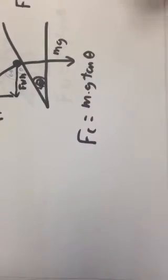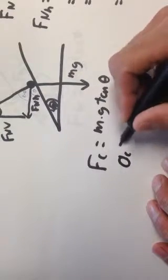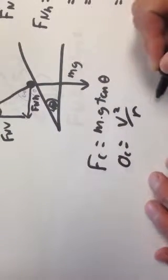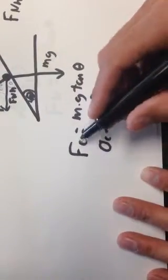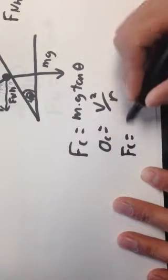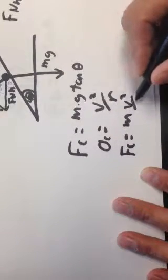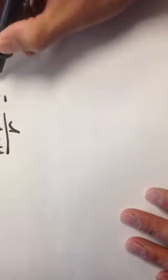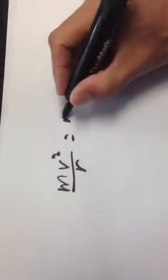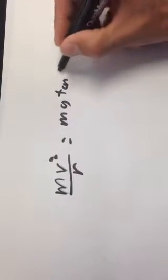With a centripetal force of MG tan theta, centripetal acceleration is V squared over R and force equals mass times acceleration. So the centripetal force is M times V squared over R, but we found it to be MG tan theta. That means M times V squared over R is equal to MG tan theta.